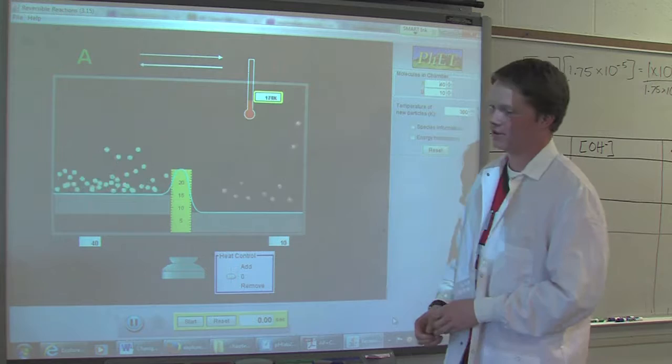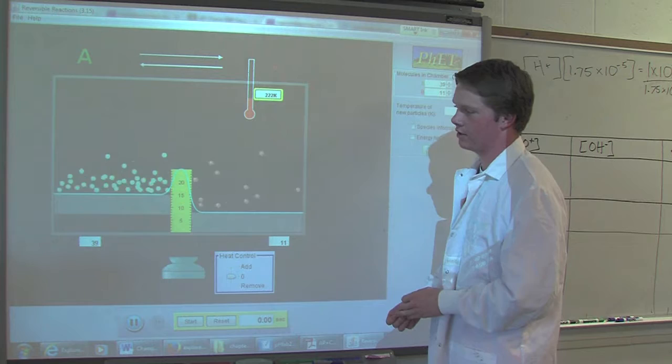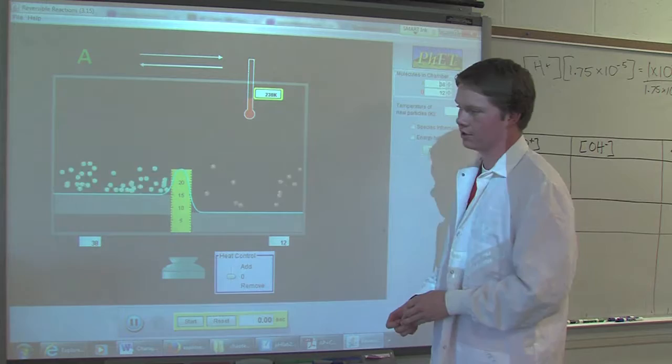When there's a lower concentration for the reactants, there will be fewer molecules to collide with each other. Therefore, the products will form slower, and that's why the initial reaction took a longer time.